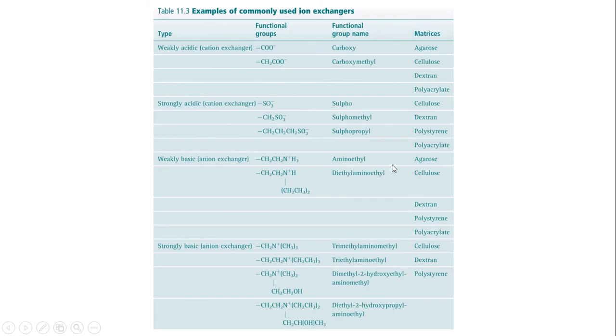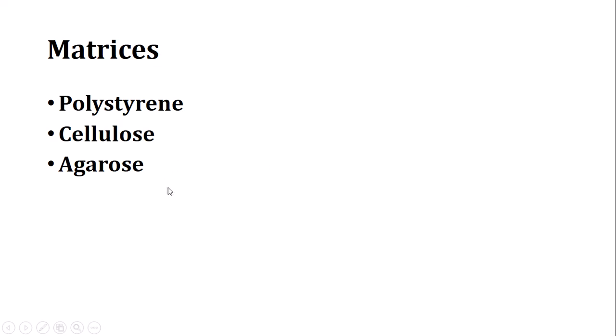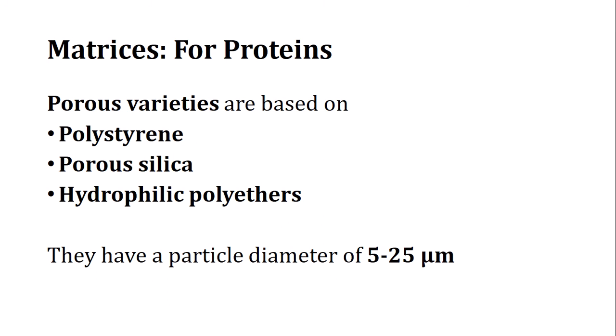There are many types of exchangers: weak cationic, strong cationic, weak anionic, and strong anionic. The matrix provides the surface for attachment. Matrix materials include polystyrene, cellulose, agarose, porous silica, and hydrophilic polyethers. These are quite inert in nature. Particles typically have a diameter of 5 to 25 micrometers, providing a large surface area for exchange, since ion exchange occurs on the surface.